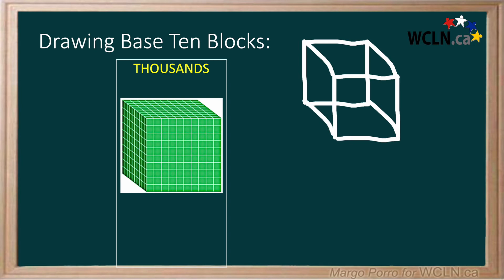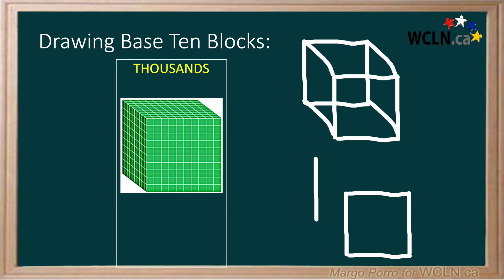Try it while I draw another one. Pause this video if needed. First, draw a square for the front of the 1000s block. Next, draw an overlapping square, like this. Finally, connect the corners, like this.